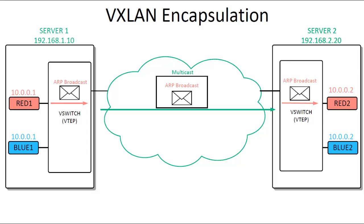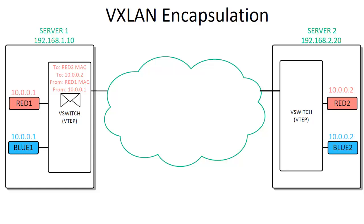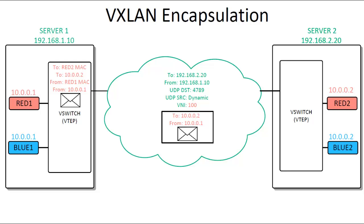Now let's take a look at the tunneling of packets in the overlay network with a packet walkthrough. RED1 wants to send a packet to RED2 at 10.0.0.2. Assuming the learning process has already completed, RED1 sends a packet with a destination IP and MAC of RED2 and a source IP and MAC of RED1. This packet is received by the VTEP in Server 1. The VTEP reads the packet, sees it came from the red tenant with the destination of RED2's MAC, does a table lookup, and finds RED2's MAC is reached through 192.168.2.20. The VTEP then encapsulates the packet with new headers. The outer layer 3 header has a destination IP of 192.168.2.20 (the VTEP on Server 2) and a source IP of 192.168.1.10 (the VTEP on Server 1).